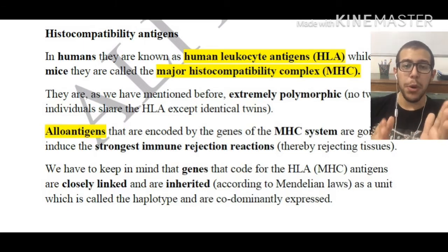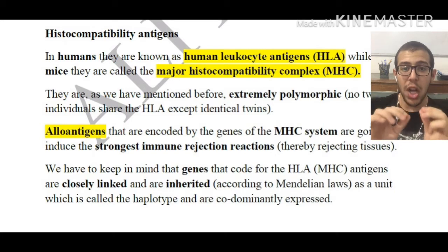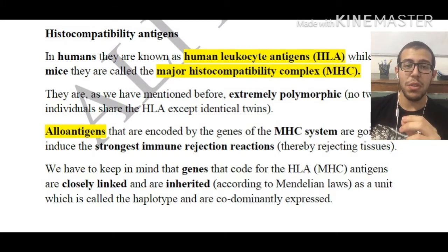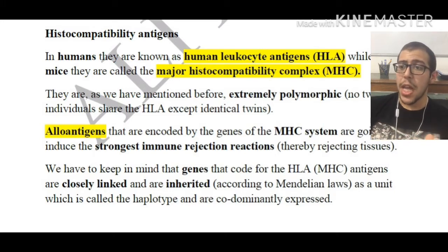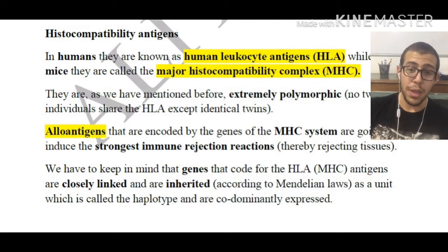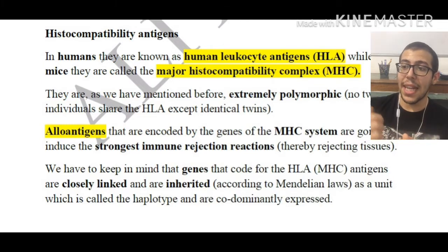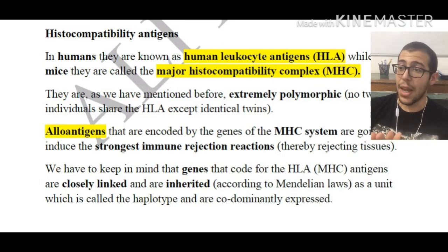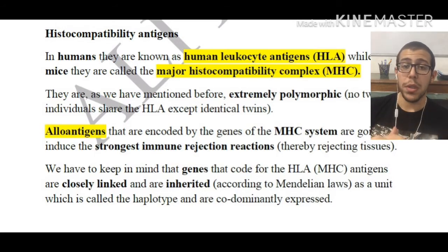The antigens causing major rejection are basically these alloantigens. The genes that code for the HLA or MHC antigens are closely linked and are inherited according to Mendelian laws as a unit, which is called the haplotype, and are codominantly expressed.